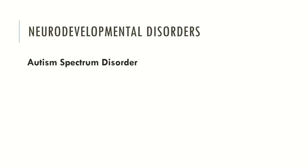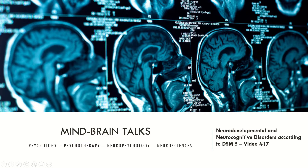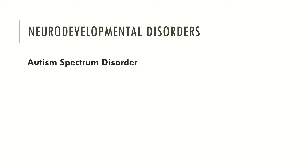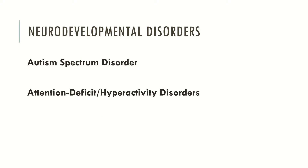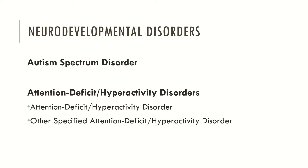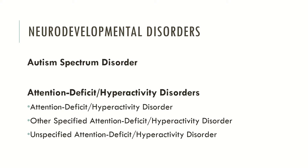Another category is autism spectrum disorder, which is a new category in the DSM-5. The category of Asperger's disorder was merged with autism disorder, and this new category — autism spectrum disorder — was developed. Individuals may be diagnosed from mild to severe autism spectrum disorder, which I will describe in future videos. Another category is attention deficit and hyperactivity disorders, which encompass ADHD, other specified ADHD, and unspecified ADHD.